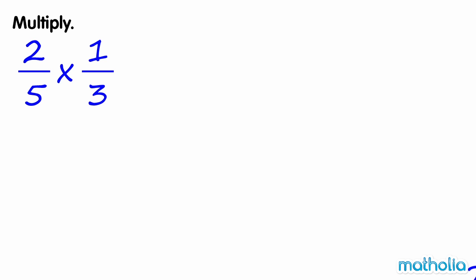Multiply. Two-fifths times one-third is equal to two times one over five times three, which equals two over fifteen. This is in its simplest form. So two-fifths times one-third is equal to two-fifteenths.